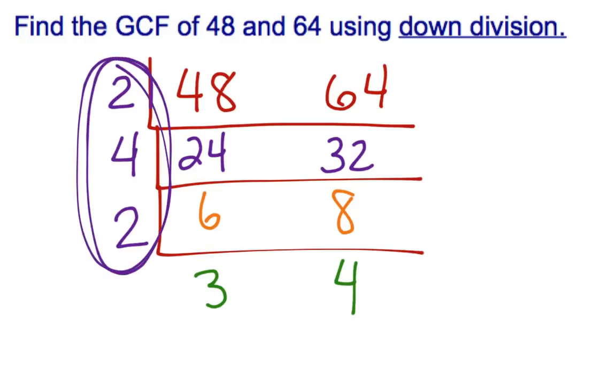Our factors, the things that we use to divide into both numbers, are these digits here on the side. We divided in two, later we divided in four, and later we divided in two again. So we take those three numbers on the side and we multiply them together. Two times four times two, two times four is eight, eight times two is sixteen.